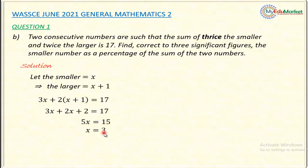So 3 is the smaller number. So I'm going to use it to find the larger, because the two numbers are consecutive. And here we said the larger, it will be x plus 1. So I'll simply get 4 after adding 1 to 3. That will be the larger number. But the question asks to find, correct to 3 significant figures, the smaller number as a percentage of the sum of the two numbers. So I have to get the sum of the two numbers, then I'll get the percentage of the smaller in relation to the sum of the two numbers.